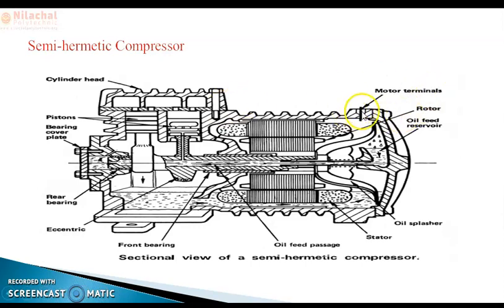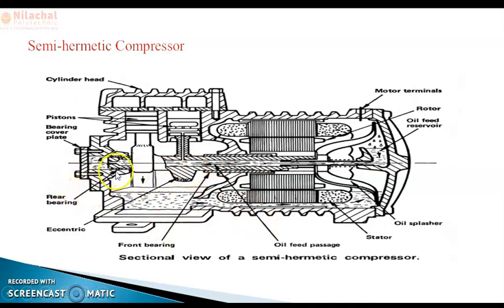The semi-hermetic compressor includes a motor terminal, rotor, oil field reservoir, starter, oil field passage, front bearing, eccentric, and rear bearing.